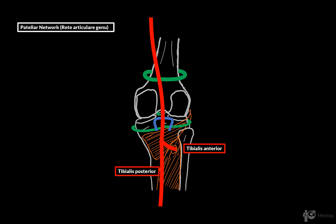Now let's go ahead and cover the patellar network, or the rete articulare genu in Latin. First, the superior and the inferior medial and lateral genicular arteries will anastomose like this.